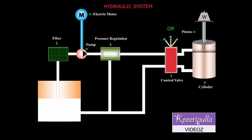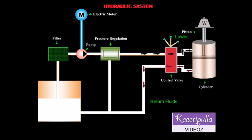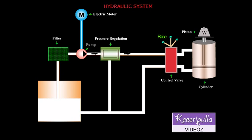When the top port is connected to the pressure line and the bottom port is connected to the hydraulic tank, the piston moves down and the weight is lowered.